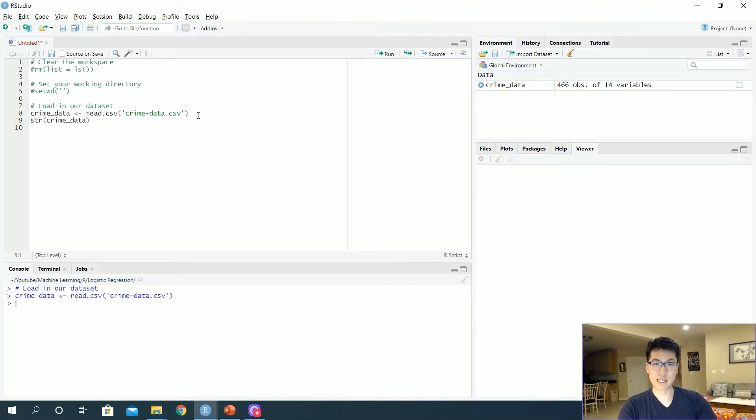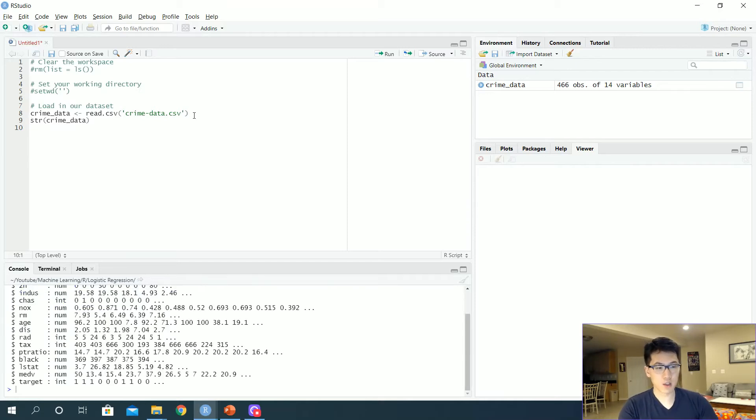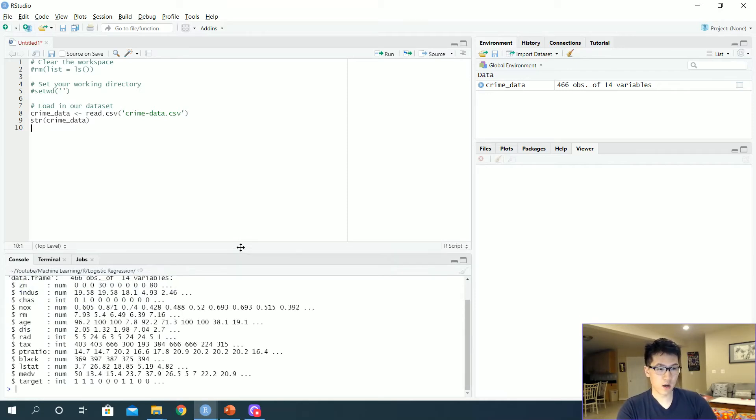We want to predict whether or not a particular person will be committing a certain crime. Note that zero is always no and one is always yes in terms of binary outcomes. Let's take a look at what the data looks like. We have a bunch of features - everything is a numerical variable - and we will want to be predicting what our target will be, either a zero or one, and provide a probabilistic tendency or prediction on whether or not, given all these factors, that person will be committing a crime.